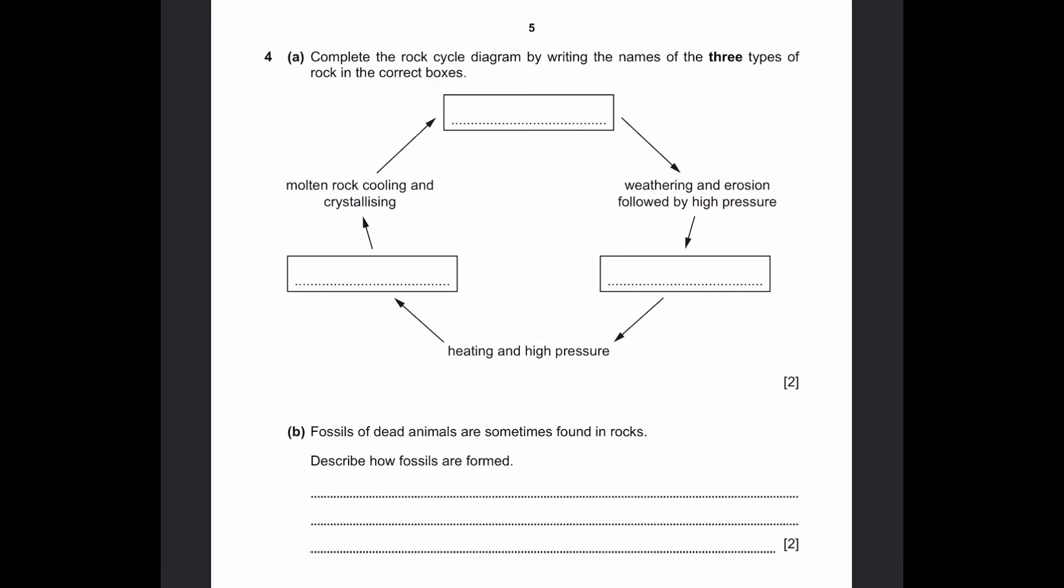Question 4. Part A: Complete the rock cycle diagram by writing in the names of the three types of rock in the correct boxes. Let's start with the top one. The arrow right before this is molten rock cooling and crystallizing. This is the formation of igneous rocks because they form from molten rock, or in other words, lava, from volcanoes. Now, weathering and erosion followed by high pressure. This kind of rock, formed by weathering and erosion as given, is simply sedimentary rock. It's called sedimentary because they're formed in sediments. After heating and high pressure of sedimentary rock, we get the third type, which is metamorphic rock. Actually, even igneous rocks can be heated and given high pressure to form metamorphic rocks, but that's just not given in this diagram as an arrow here. Usually, it is sedimentary rocks that change into metamorphic.